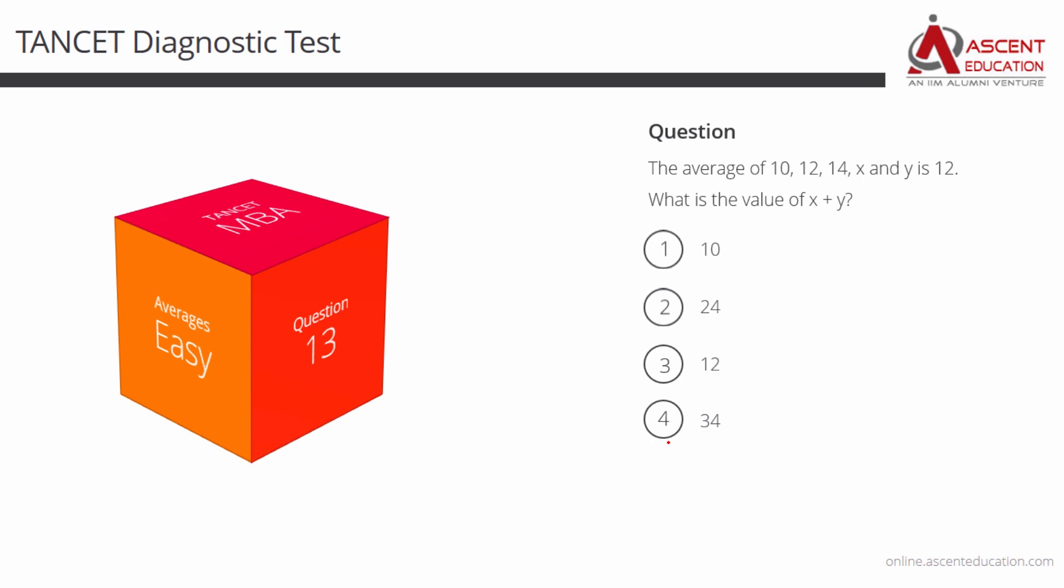The average of 10, 12, 14, x and y. The average is given. They have said the average is equal to 12. What we need to find out is not what is x, what is y. We need to find out what is x plus y.